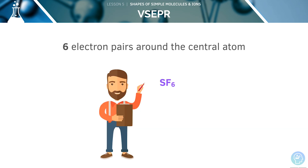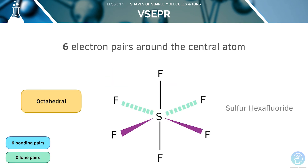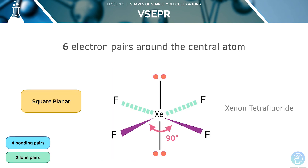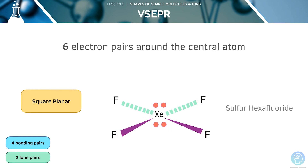We'll now look at another sulfur compound, sulfur hexafluoride. Sulfur has six outer electrons and so forms six covalent bonds, so it has no lone pairs and six bonding pairs. The angles are 90 degrees in the plane and 90 degrees above and below the plane. This shape is known as octahedral. Our next compound is xenon tetrafluoride. Xenon has eight outer electrons and is forming four covalent bonds, so it has two lone pairs and four bonding pairs. This shape is called square planar and the angle is 90 degrees in the plane.